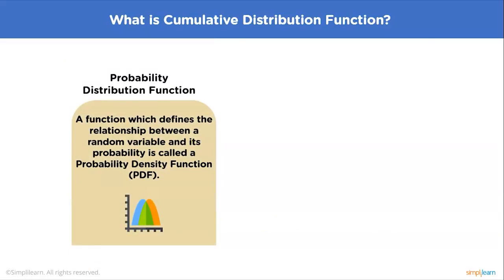Now let's clarify some terms. A probability density function is a function that defines the relationship between a random variable and its probability. It shows this relationship such that solving the function gives the probability density distribution for that random variable. The PDF of a continuous random variable is a function whose value at any given point in the sample space can be interpreted as providing a relative likelihood that the random variable equals that sample.